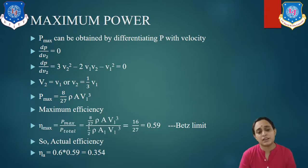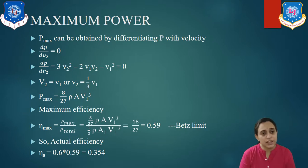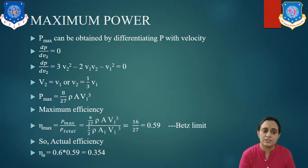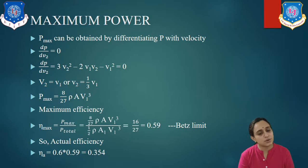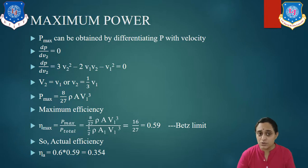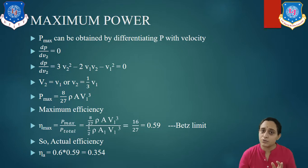To find maximum power, we differentiate P with respect to V2 and set it to zero: dP/dV2 = 0. Differentiating gives 3V2² − 2V1V2 − V1² = 0, since ρ, mass, and area are constants and only velocity changes.